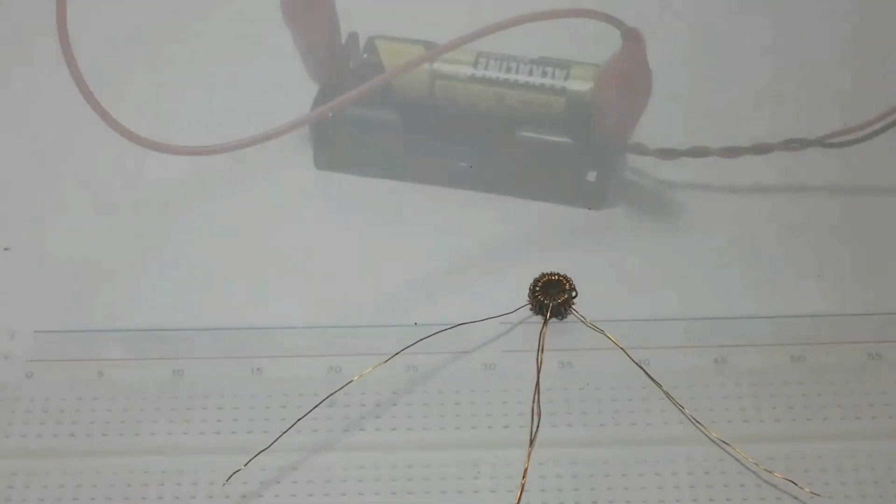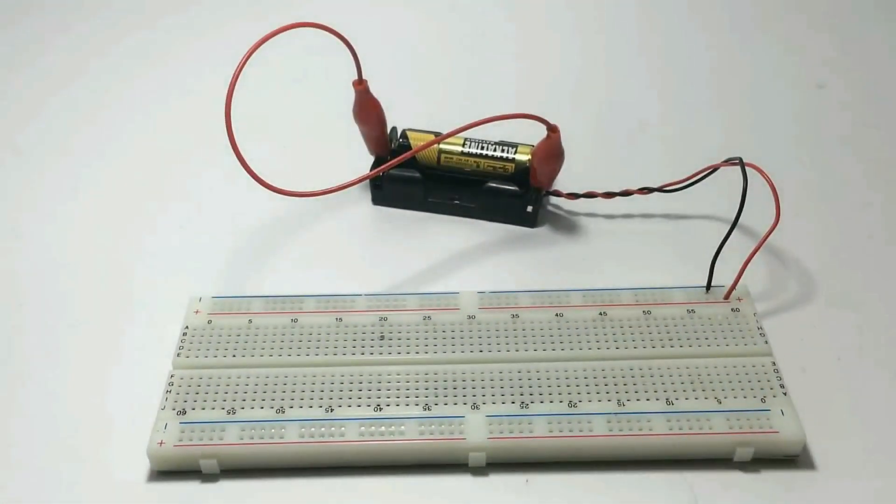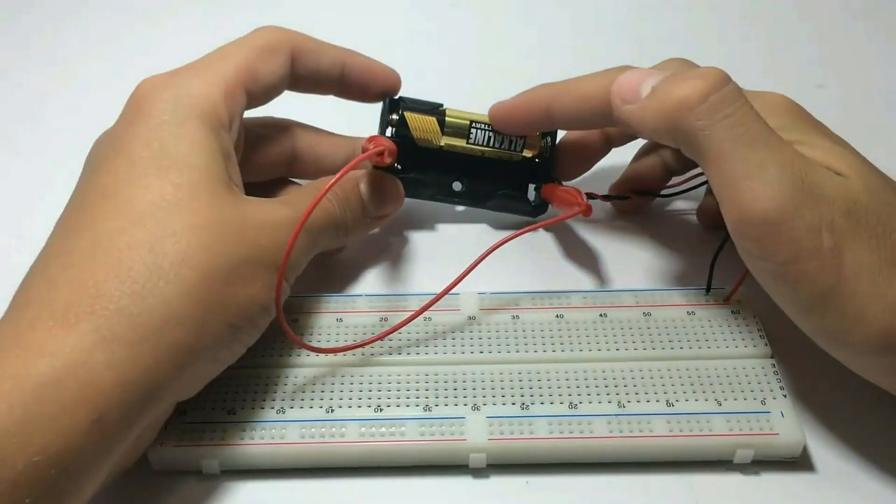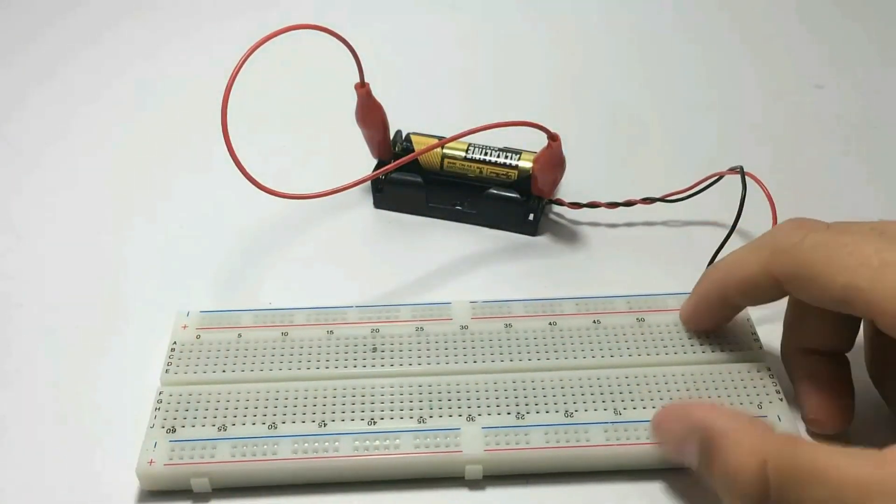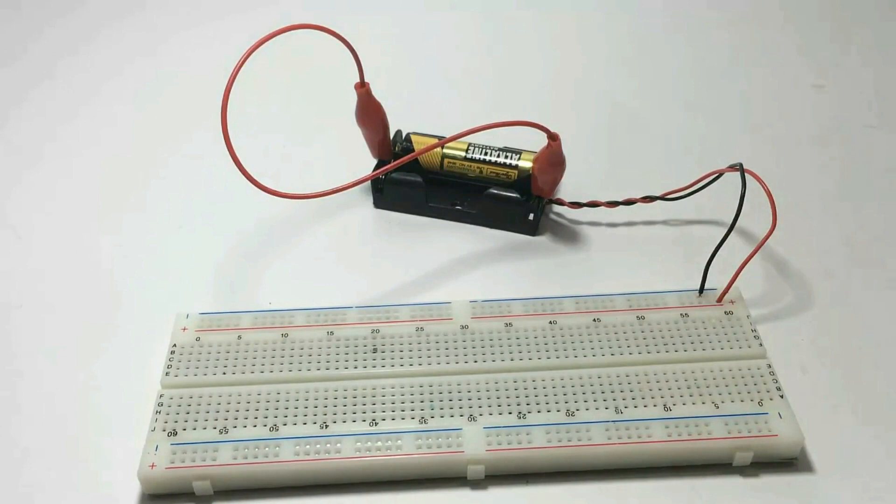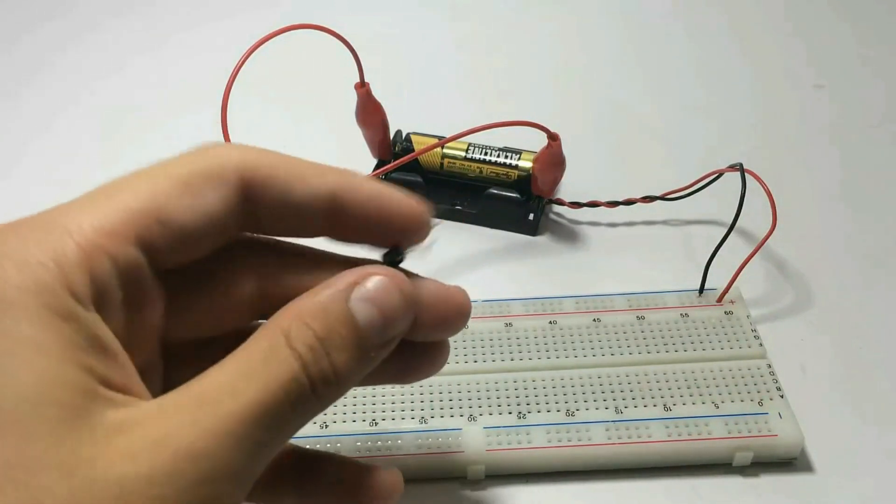Okay now it's time to make it. Here I have a 1.5 volt battery connected to the circuit board, positive side and negative side. First place the transistor - emitter, base and collector.